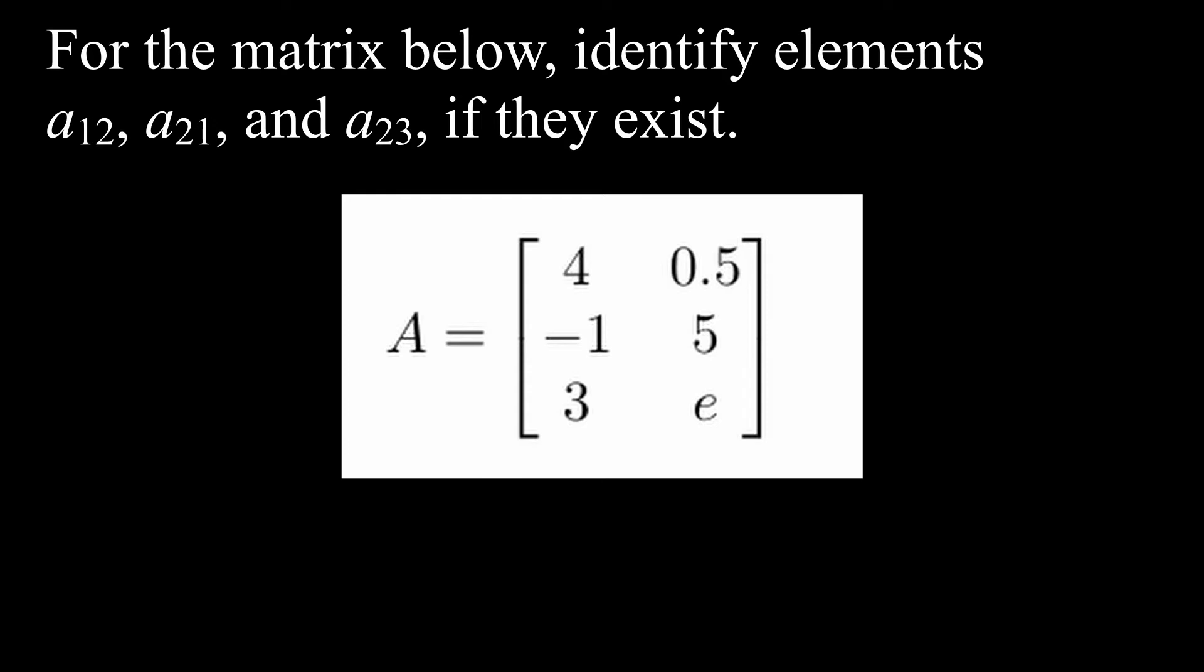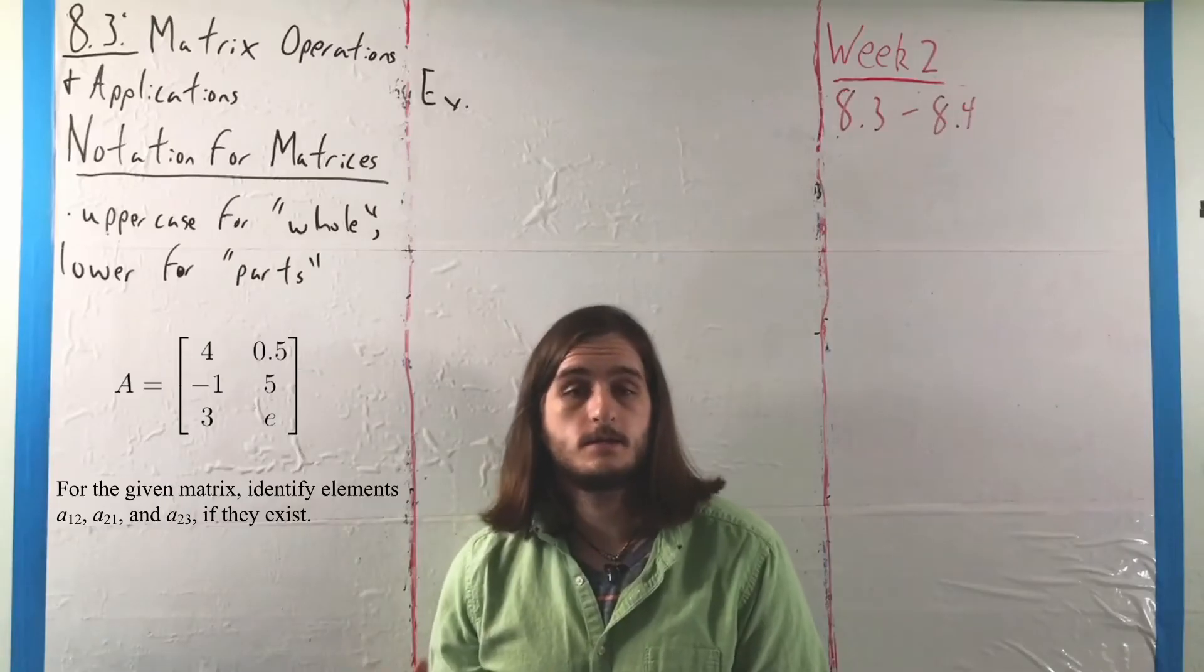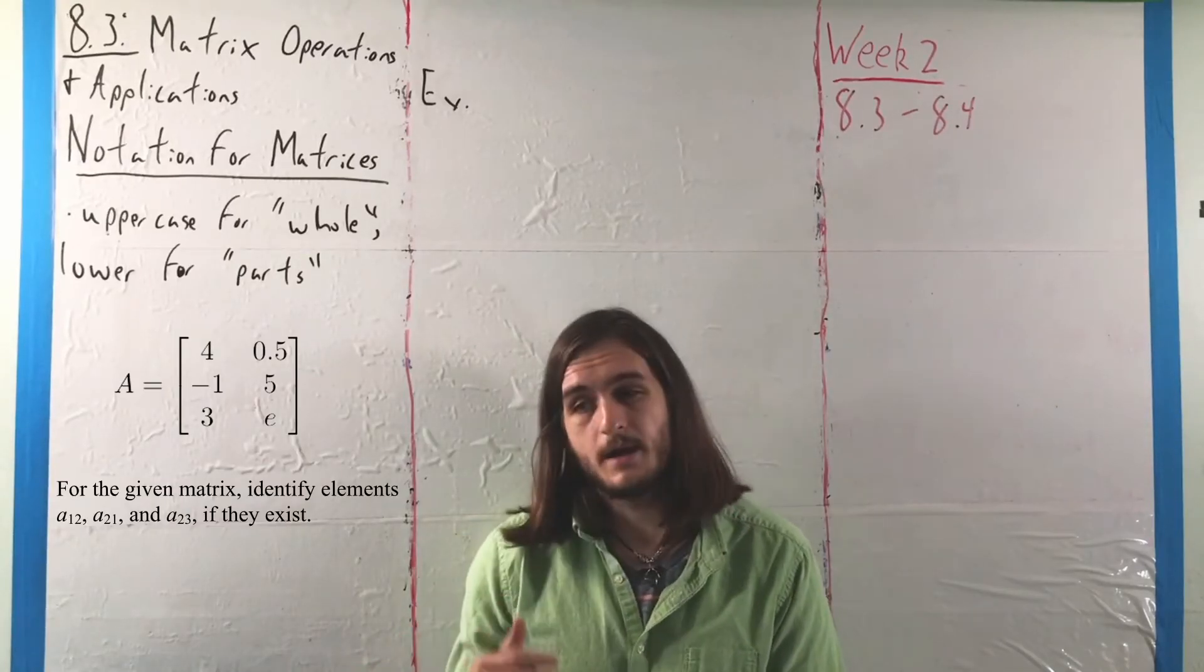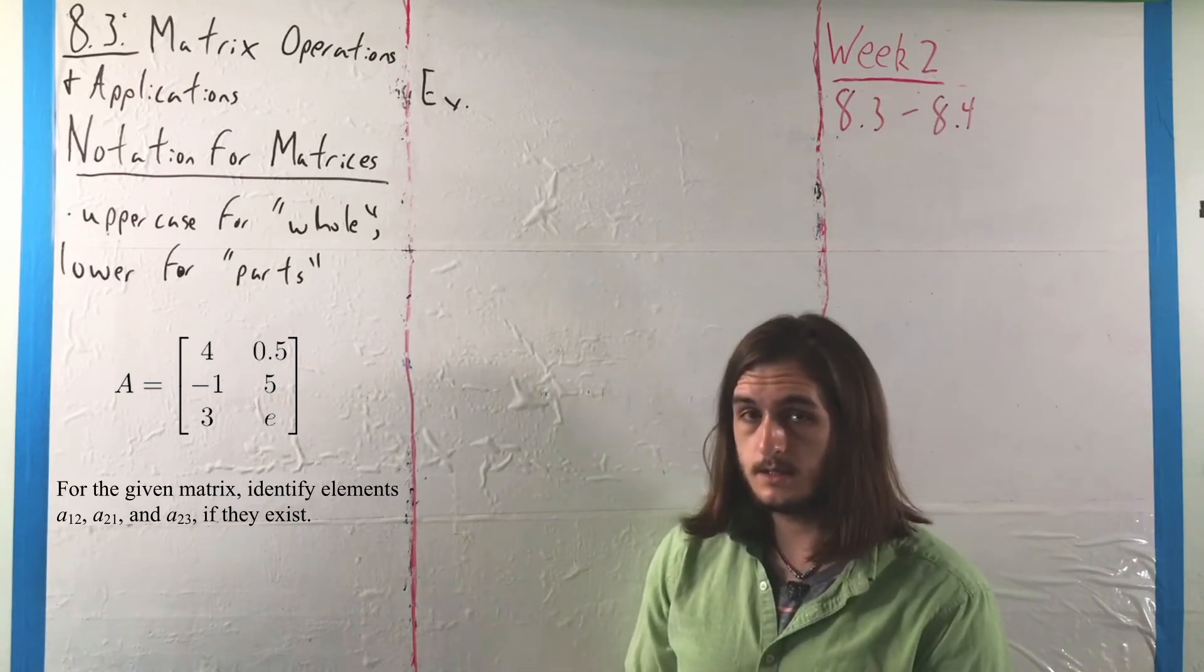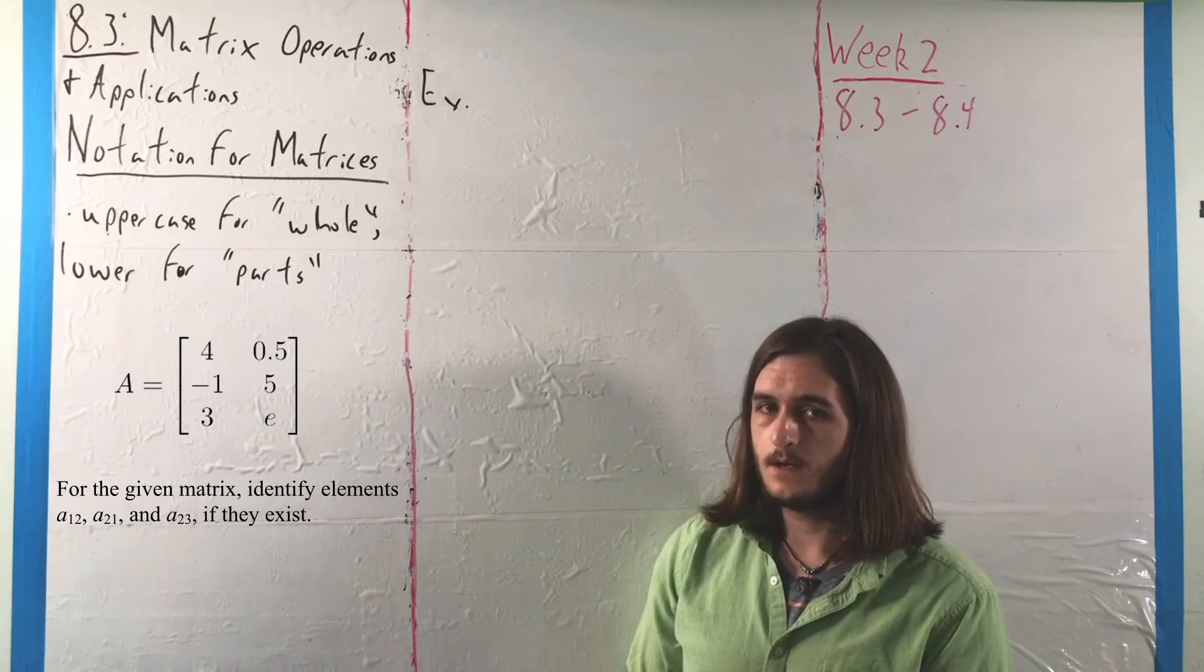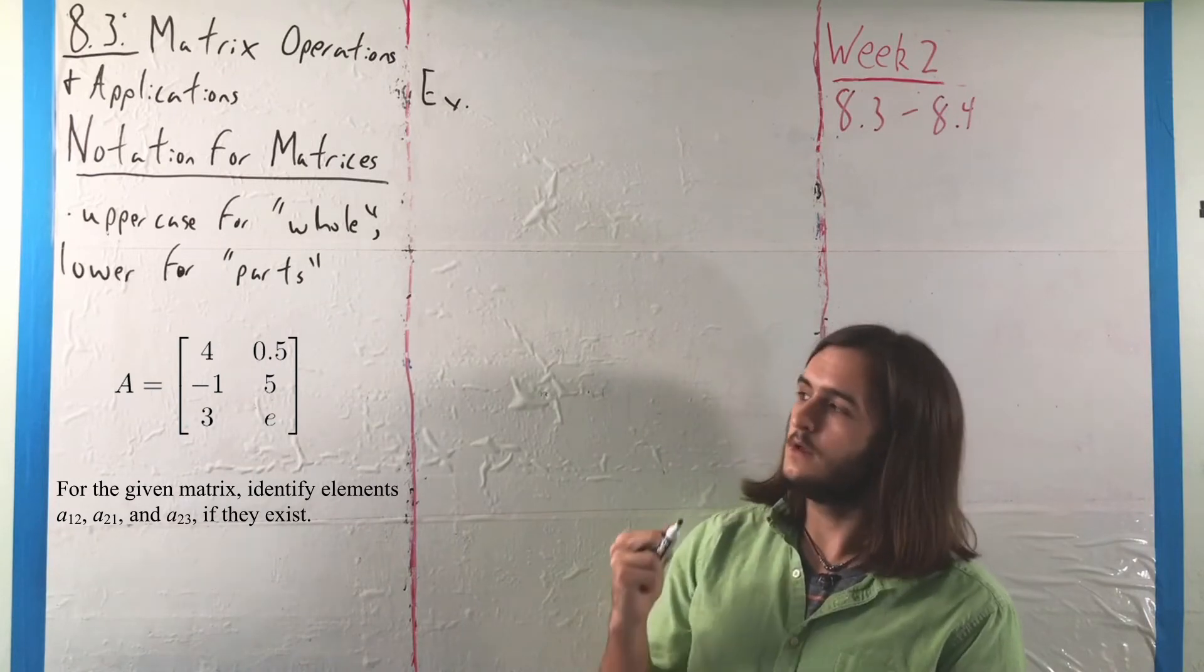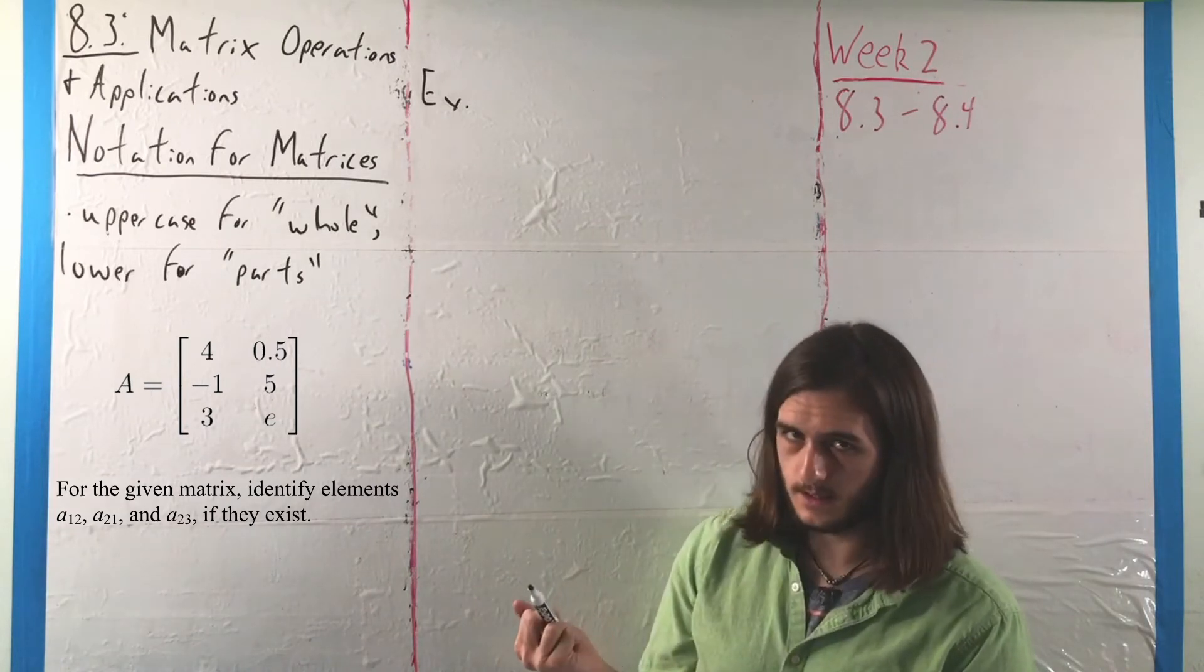We want to identify the elements a12, a21, and a23, assuming they exist. Existence does matter here because it's defined by the shape of what we're looking at. So we have to be careful when reading those coordinates.